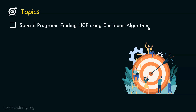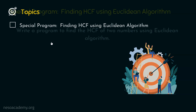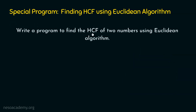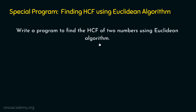We learned this concept in the last lecture. Now, let's understand the problem statement before writing the program. The problem statement is: write a program to find the HCF of two numbers using the Euclidean algorithm. You might be wondering what exactly this Euclidean algorithm is. We will understand what it means and what this algorithm is capable of.